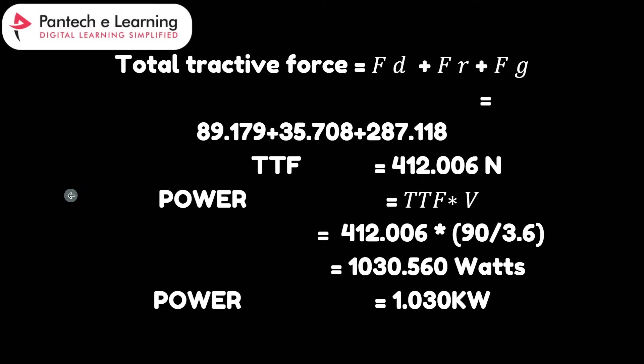Once again, this is the total tractive force formula. We sum all the forces: aerodynamic force, rolling resistance force, and gradient force to get the total tractive force. After that, we calculate the power. The power formula is total tractive force multiplied by the velocity.